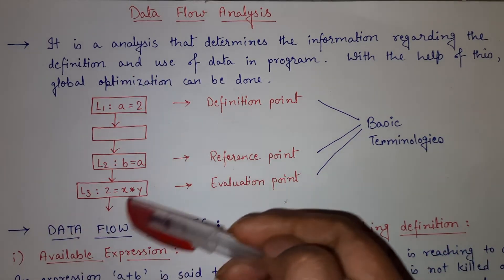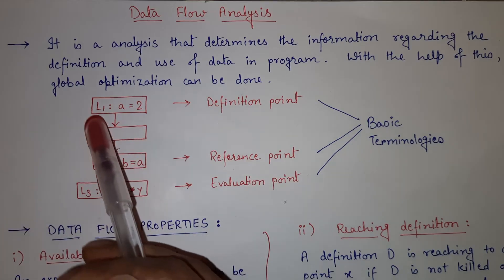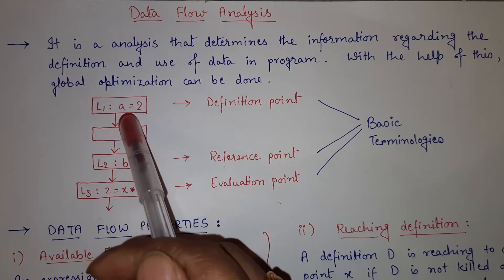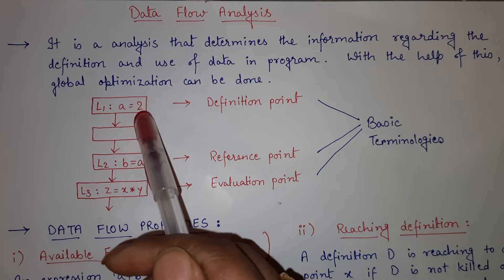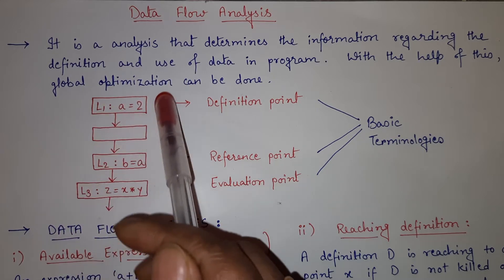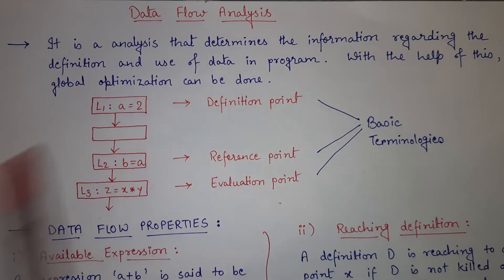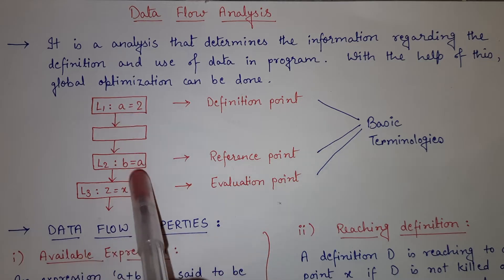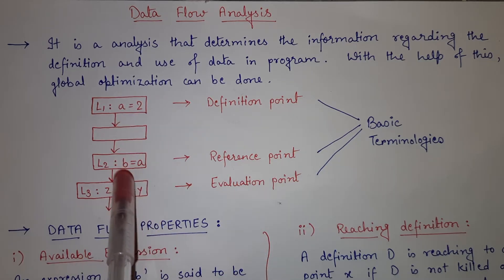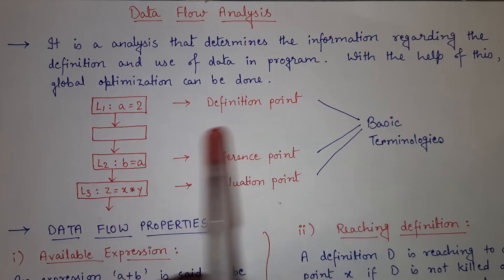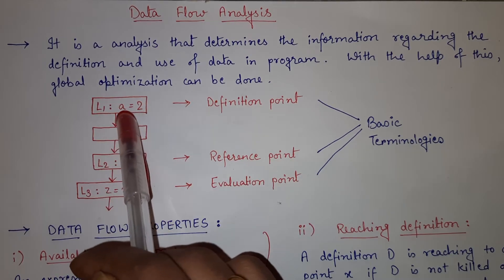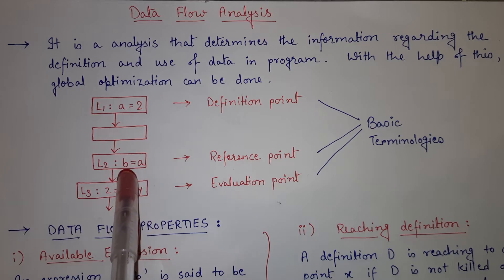In a data flow graph, whenever you have any block where you are defining any variable — like here we have defined variable a and assigned the value 2, so a = 2 — this is the definition point. Similarly, after defining a, if we take the reference of a to another variable b, this is known as a reference point. We have already defined the value of a as 2 and now we are taking the reference of a to variable b, so b = a is our reference point.